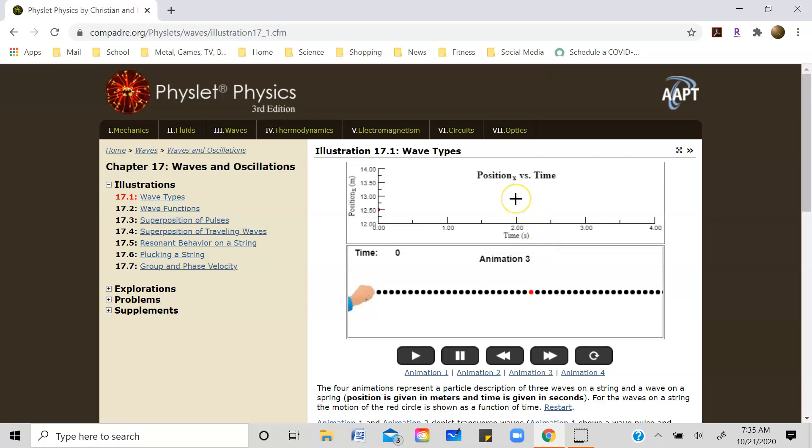So what they do is they very nicely depict for us here on this graph the amplitude of this longitudinal wave pulse. Once again, that's the maximum disturbance of the red dot from its equilibrium position as a function of time.